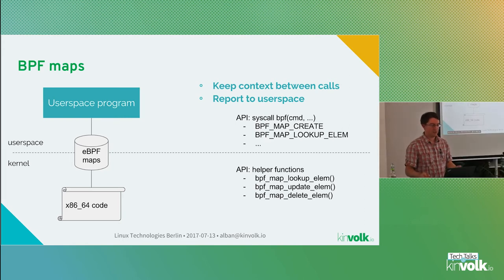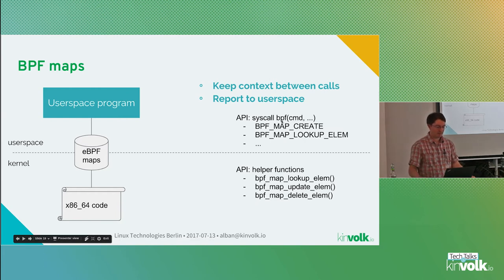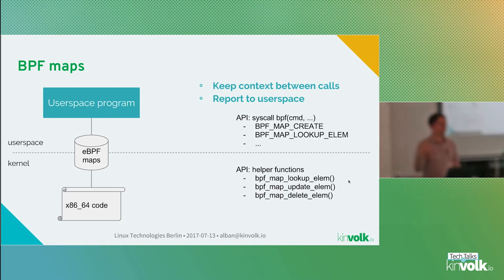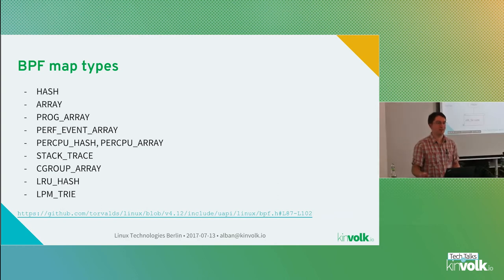Maps can be used for basically anything. This variable can be modified both from user space and from the kernel, with a different API from user space. The API is always through the BPF system call, which is a kind of multiplexing system call. There are commands to create a new map, look up an element in the map, or delete an element. From the BPF side there are helper functions that can do the same.